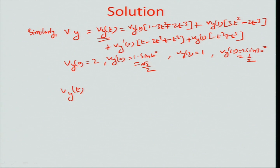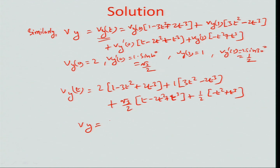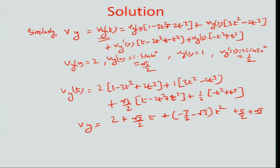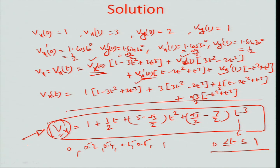Substituting values, Vy(t) = 2×(1 − 3t² + 2t³) + 1×(3t² − 2t³) + (√3/2)×(t − 2t² + t³) + (1/2)×(−t² + t³). Simplifying in a similar manner, Vy(t) = 2 + (√3/2)t + (−7/2 − √3)t² + (5/2 + √3/2)t³. This expression reports the y-value of the fit, corresponding to the x-value given by the earlier expression.